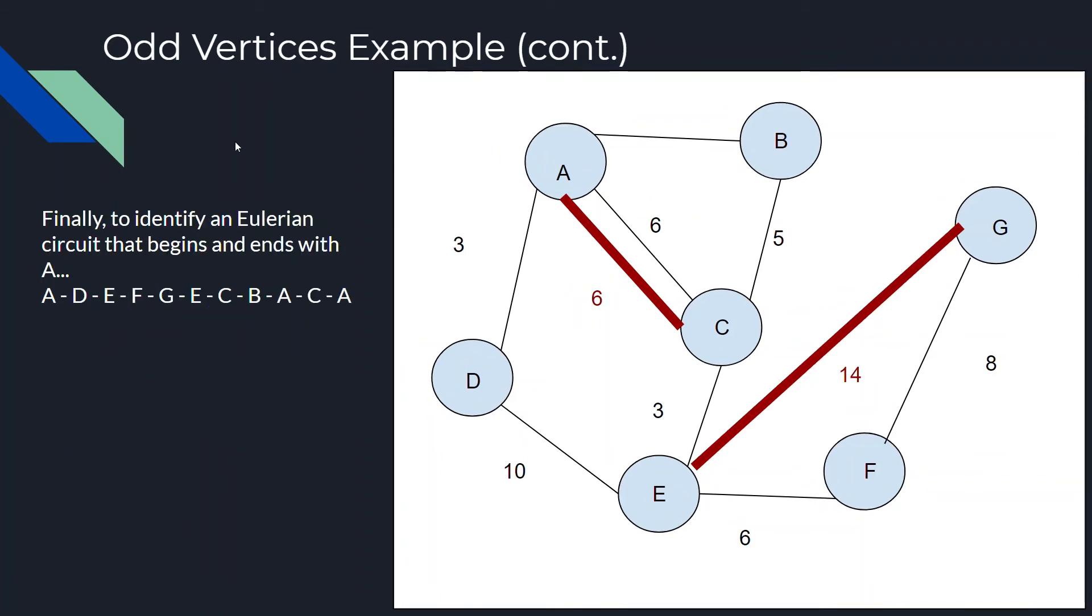And then very finally, we have our Eulerian circuit to identify. And we can find that out pretty quick. A, D, E, F, G, E, C, B, A, C, A.